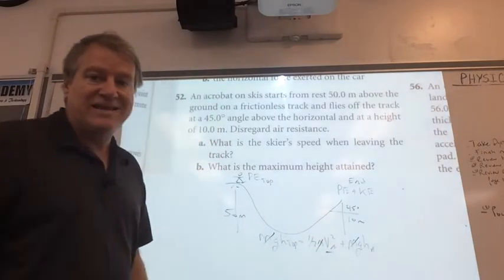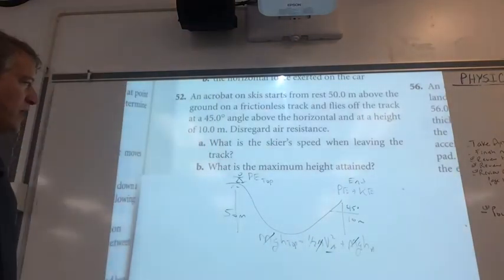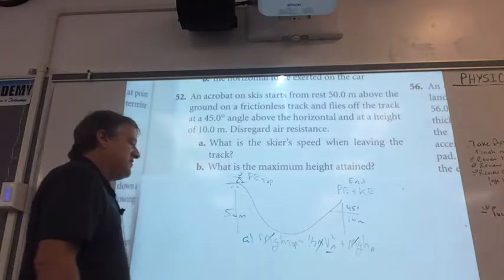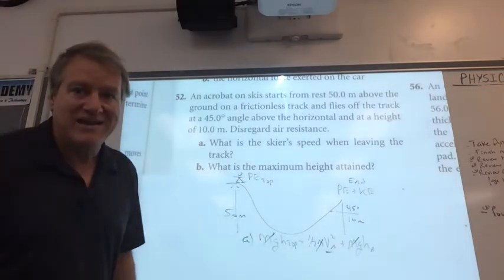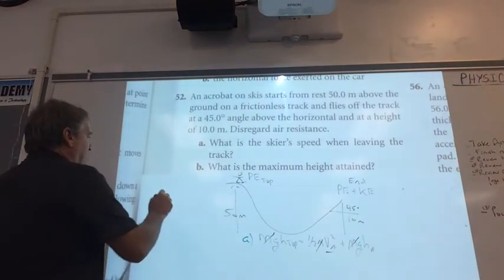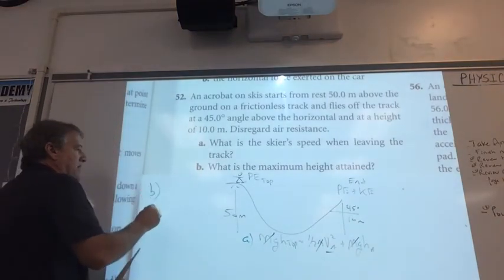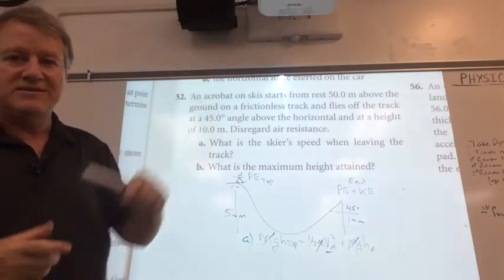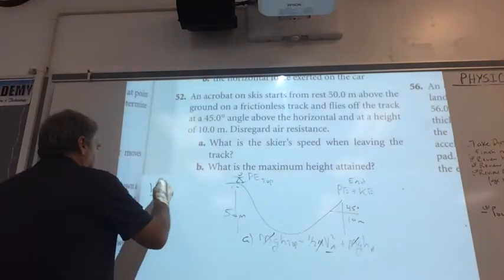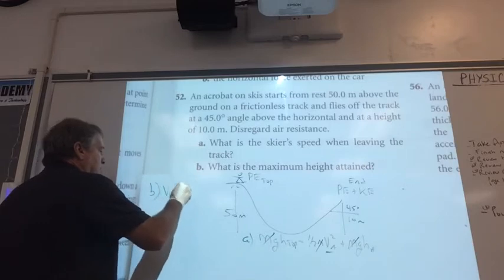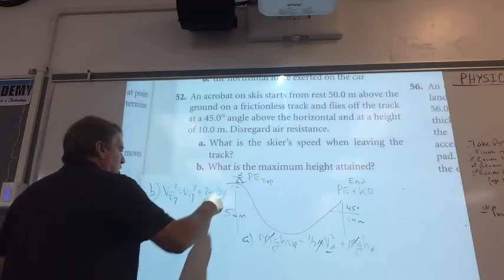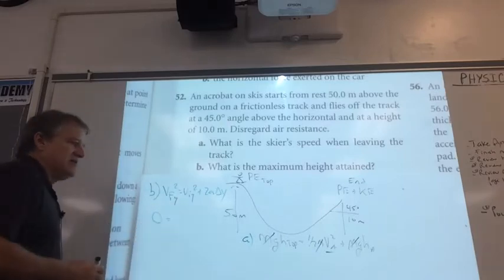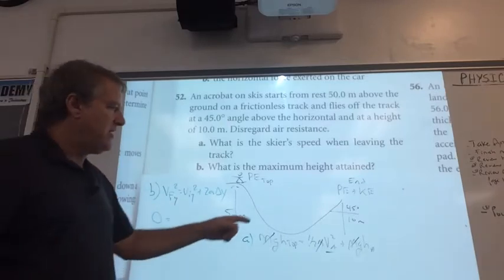Now the second question is what is the maximum height attained. So this is a problem that we're gonna have to go back and use kinematics. Oh my gosh, but it's not that hard. Watch guys, I know that we're looking for the height. Remember, what is the speed of any object at its highest point? Zero. So we're gonna use this one: v_fy squared equals v_iy squared plus 2a delta y. All right, we know that the final velocity is zero.